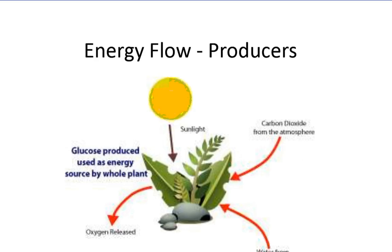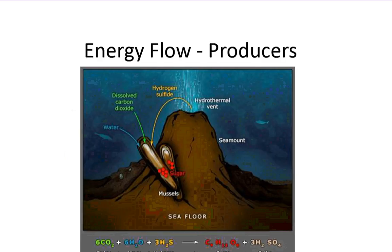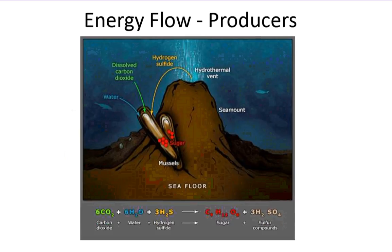Some organisms use energy that's bound up in chemicals to produce food, like deep sea vents where there's no light in the aphotic zone. Some of these organisms use certain chemicals like hydrogen sulfide in order to make sugar. This is not called photosynthesis because photo means light. This is called chemosynthesis.